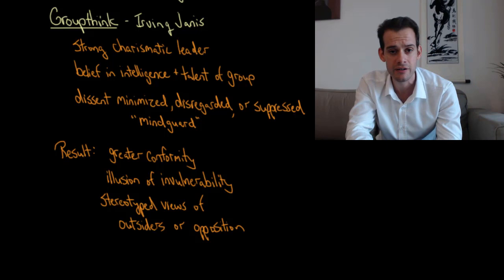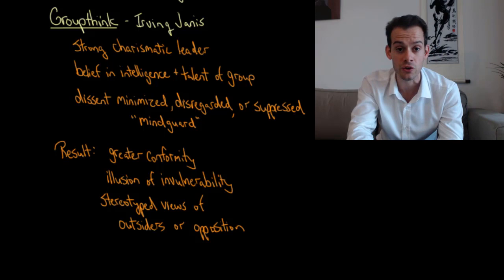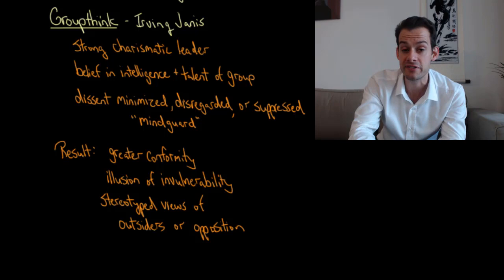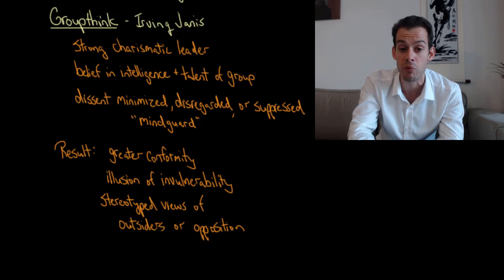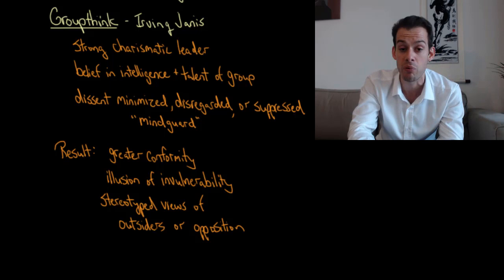And the result of these characteristics of groups is that they experience greater conformity, they have an illusion of invulnerability that they can't possibly make mistakes, and they tend to develop stereotyped views of outsiders or of the opposition. And these factors can all contribute to poor decision making.